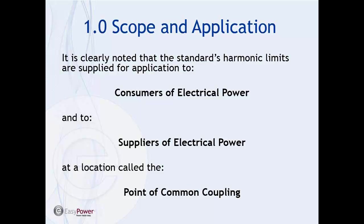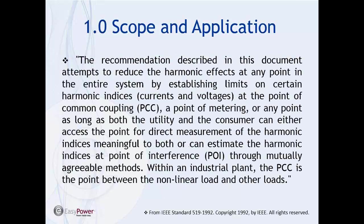The standard clearly notes that harmonic limits are supplied for application to consumers of electrical power and to suppliers of electrical power at a location called the point of common coupling. The recommendation described in this document attempts to reduce the harmonic effects at any point in the entire system by establishing limits on certain harmonic indices — currents and voltages — at the point of common coupling, a point of metering or any point as long as both the utility and the consumer can access it for direct measurement.